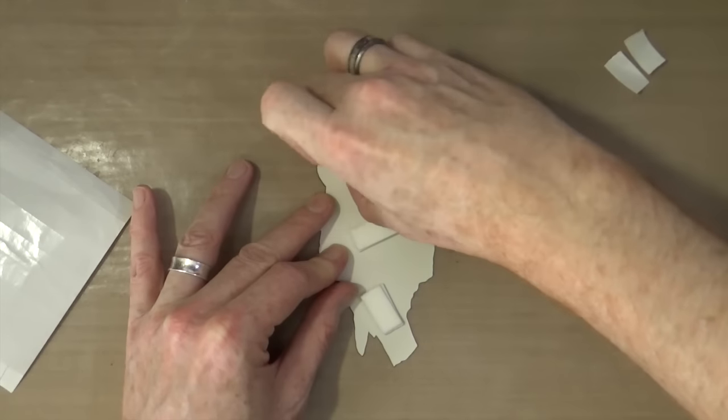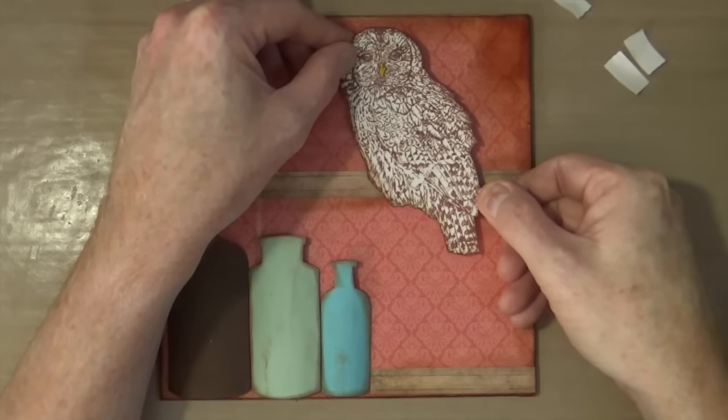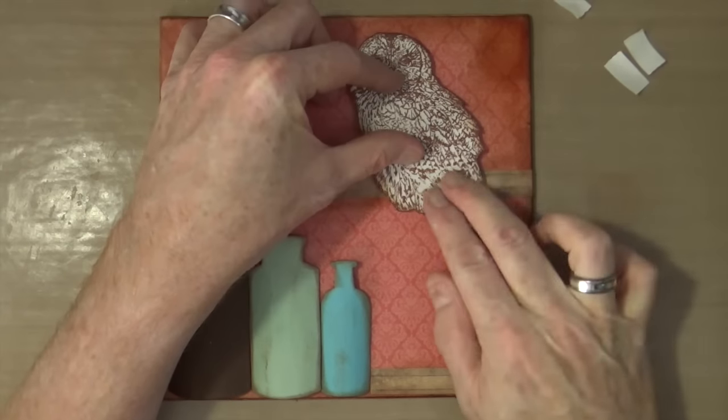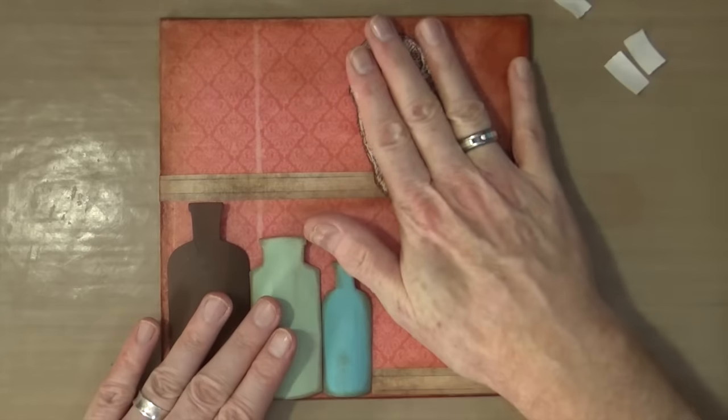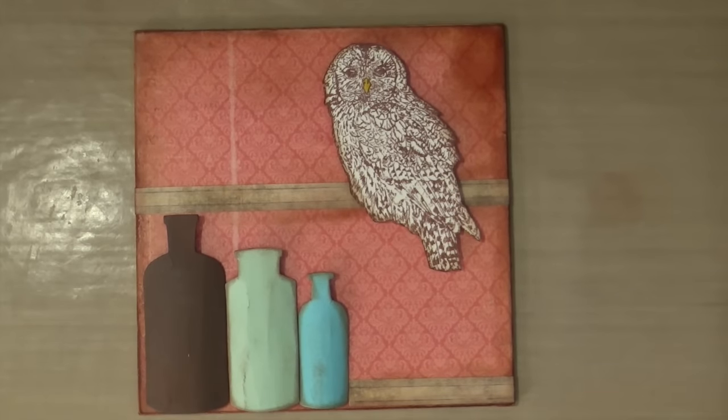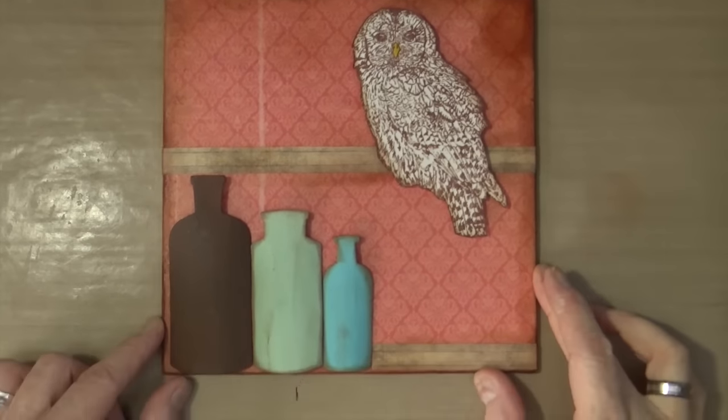As sometimes happens when you're filming projects like this, you forget sometimes to switch the camera on. You won't have seen me stick the two pieces of wooden effect paper across the bottom and across the centre of the canvas. I do apologize for that, but I just forgot to press record. Trust me, all I did was stick them down with glue, you didn't miss much.